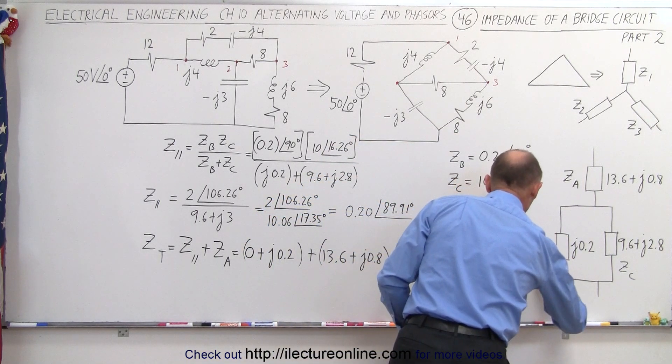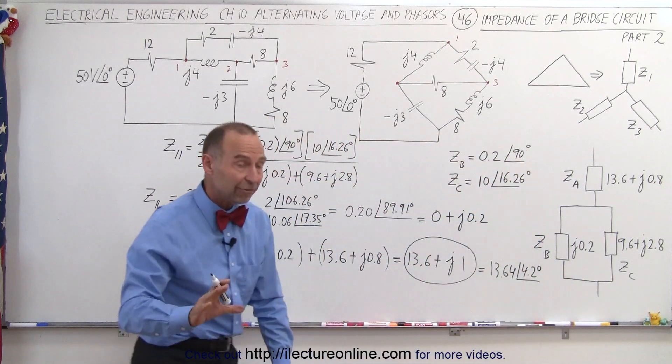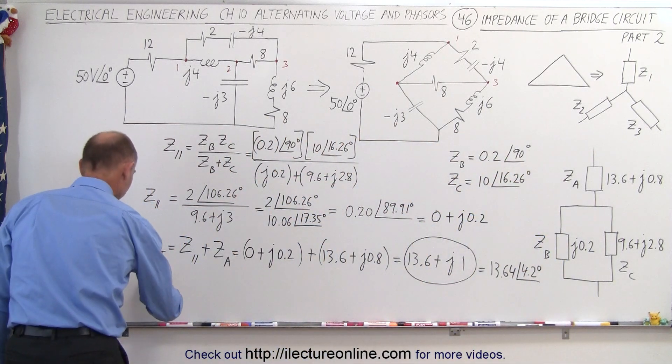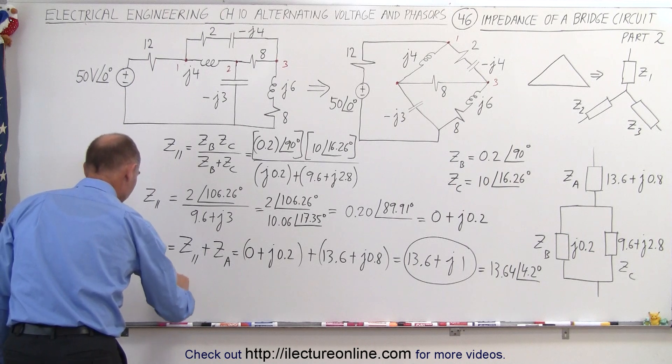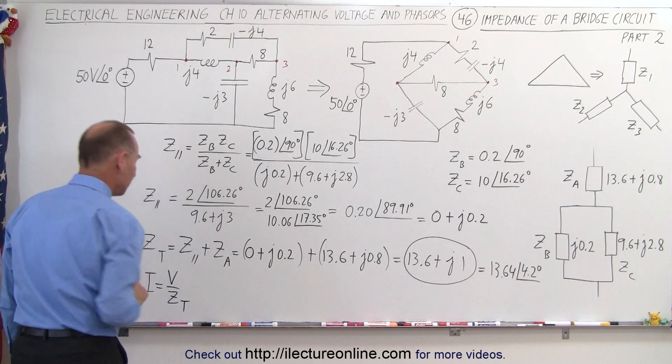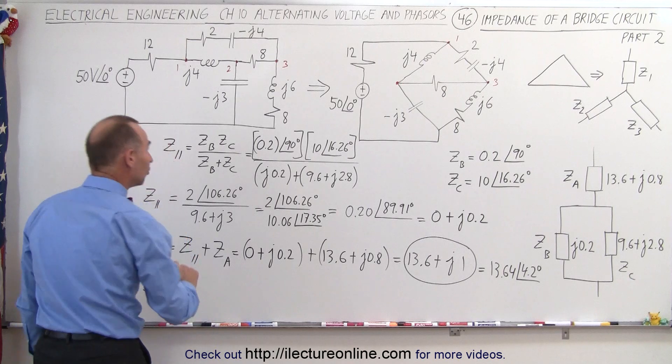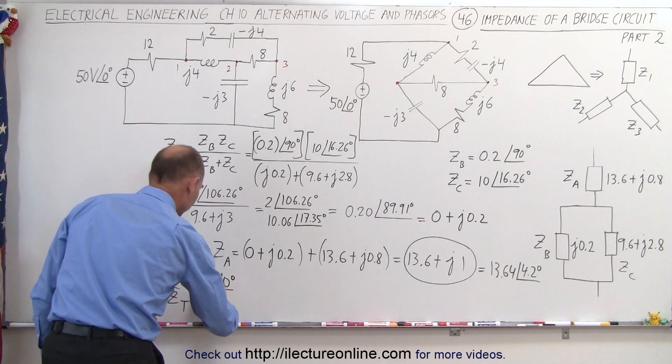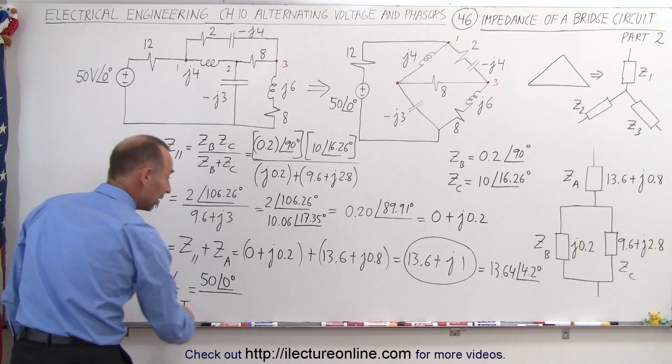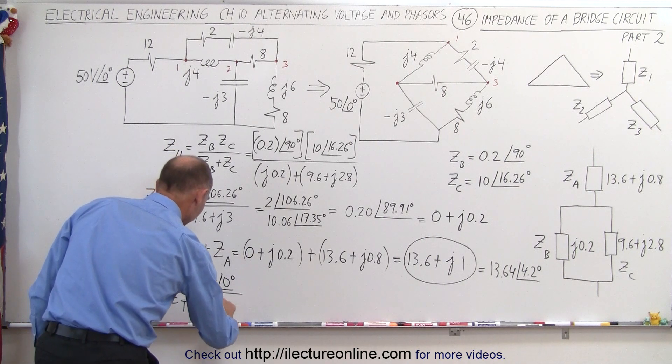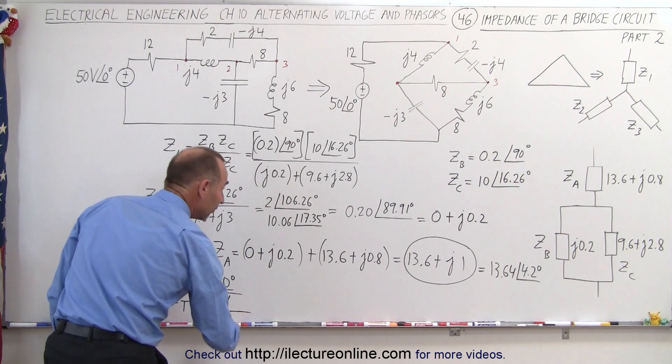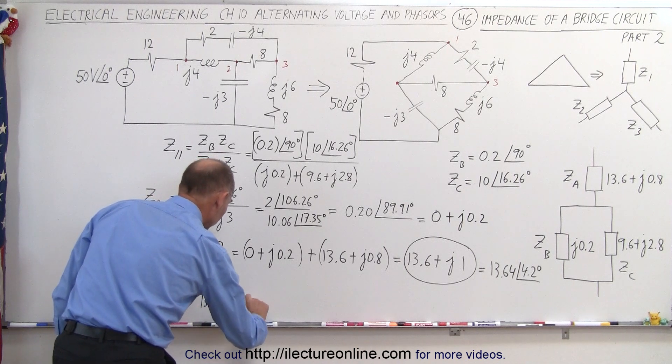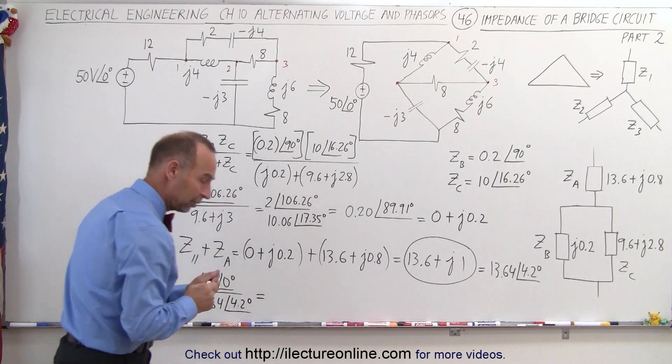The reason why I wanted it in that format, because now I want to find the current I, which is the input voltage V over the total impedance. The input voltage was 50 with a phase angle of 0 degrees. We divide that by the total impedance, that would be 13.64 with a phase angle of 4.2 degrees.